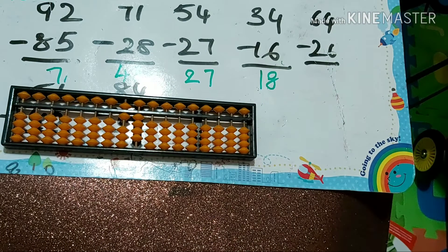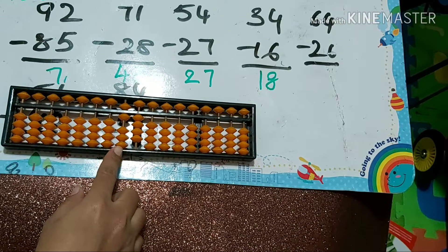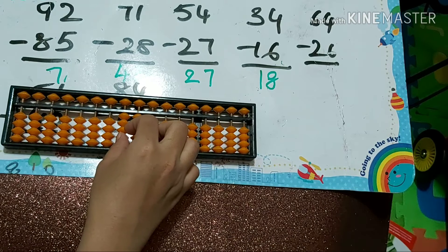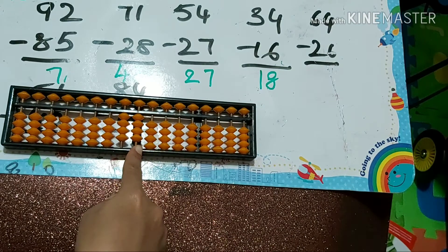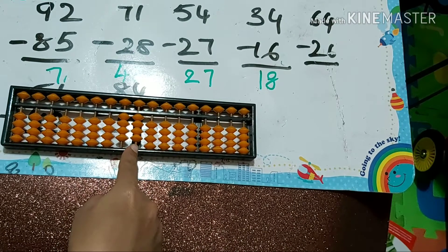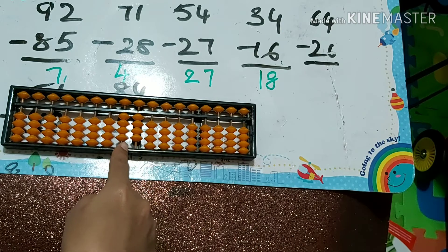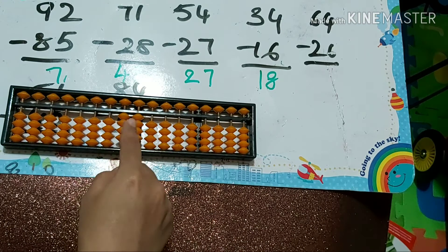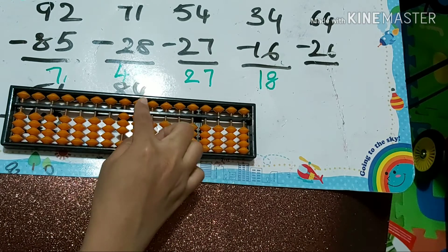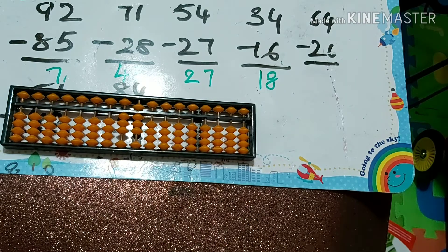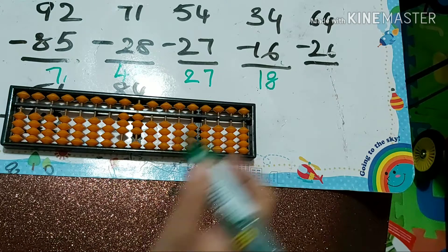Next one: 64 minus 26. How to do minus 2: we must use the small friend — minus 5 plus 3. Next you must do minus 6 — papa down, mama down, babies down — so minus 10 plus 5 minus 1. Answer is 38.